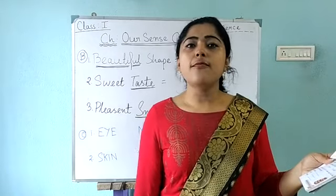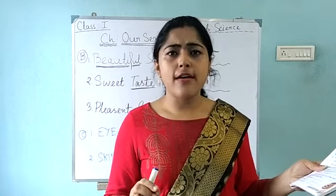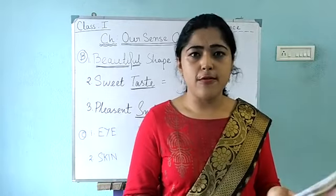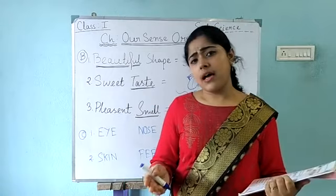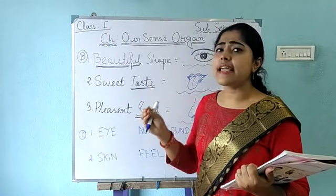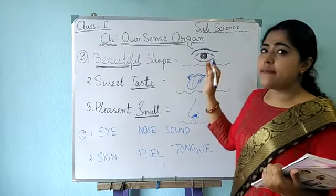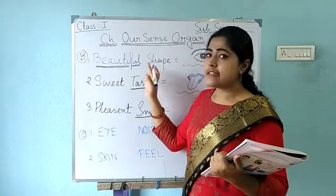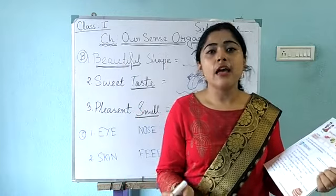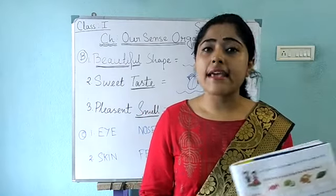Question number 1: beautiful shape. By which sense organs can you know that this cake's shape is beautiful? How could you know that the birthday cake is beautiful? By your eyes. There is an eye, and by your eyes you can see that the shape is beautiful. When you see your birthday cake, by your eyes you can know that the cake is beautiful.